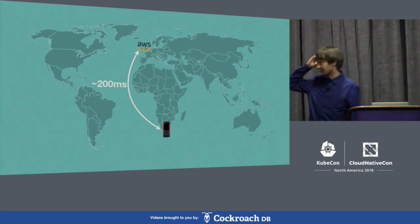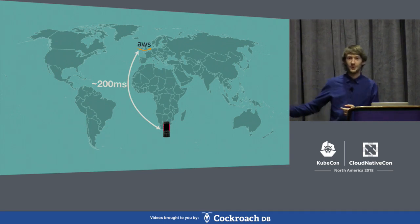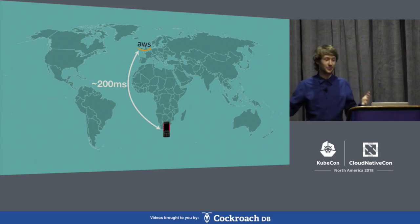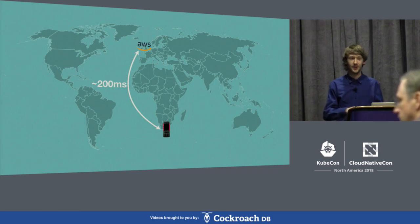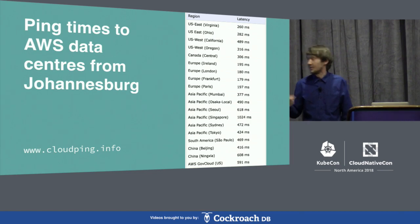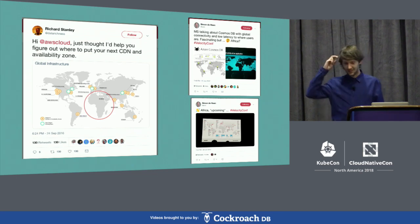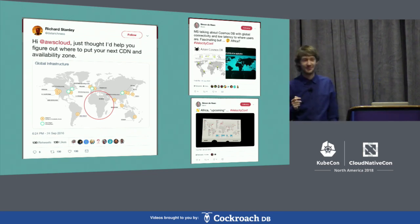A big problem with this is that Ireland is quite far away from where a lot of our users are. You basically have a 200-millisecond round-trip time, and that's not even taking into account the time to actually look up the data. And then when you get to South Africa or wherever, you have a 2G or 3G high-latency network. Here's a list of ping times between AWS data centers and Johannesburg — the best you can do is basically 180 milliseconds to somewhere in Central Europe, which is not great. There are no first-class cloud data centers anywhere in Africa yet.